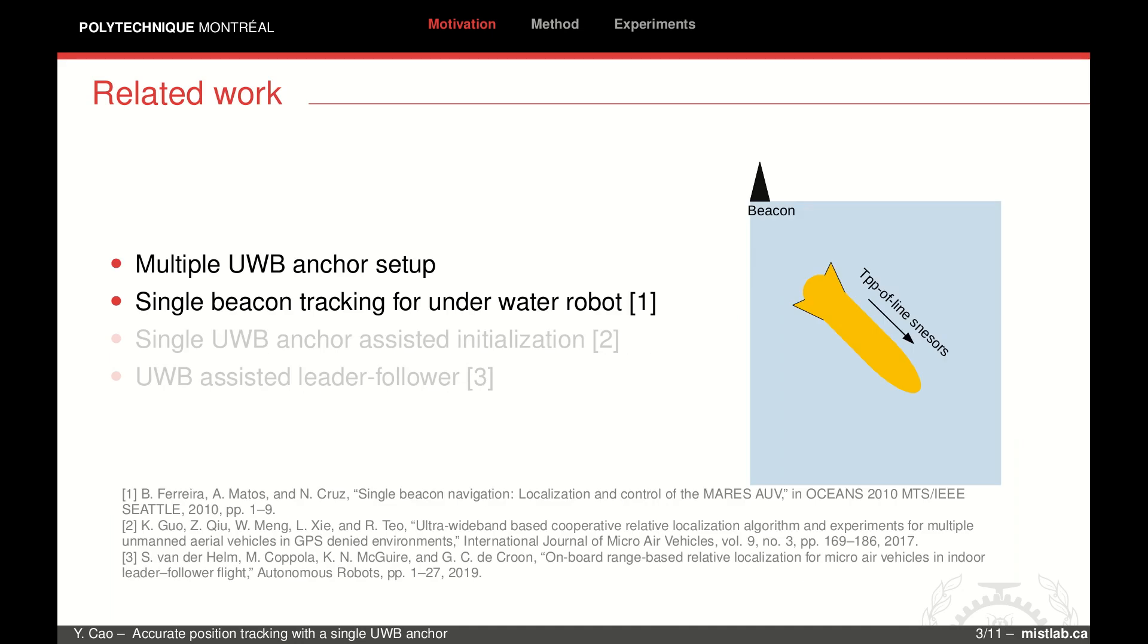Single anchor or beacon localization is not easy. Some research on underwater robots tried to track a robot with a single beacon on a base station. However, an AUV usually has a set of advanced sensors such as accurate IMU, Doppler sensors, and acoustic sensors.